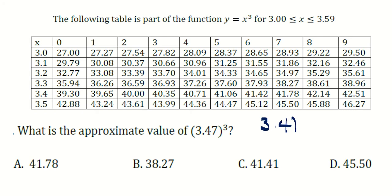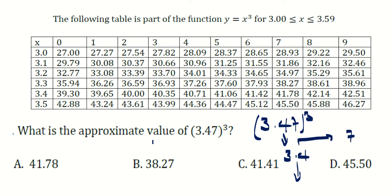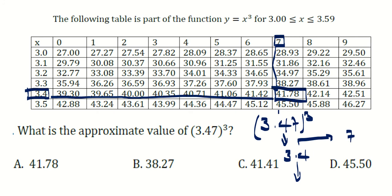We don't have to multiply 3.47 three times. Instead, we will read from the table. There is a systematic way of reading. First, read 3.4 from the column, then move seven units horizontally. You connect the two, go down, and also move horizontally. The intersection point gives us 41.78, so the answer is A.